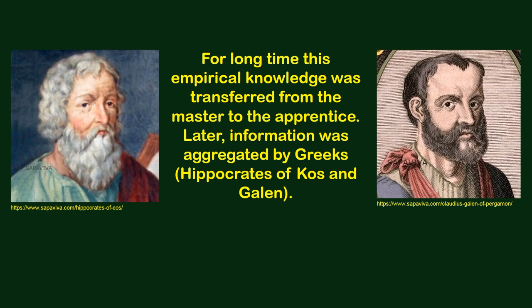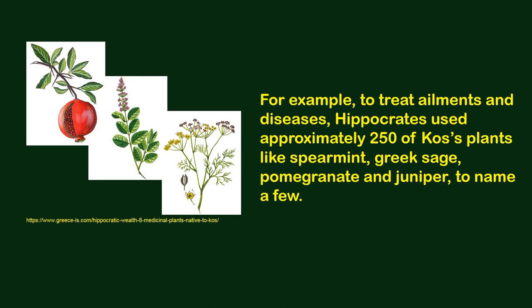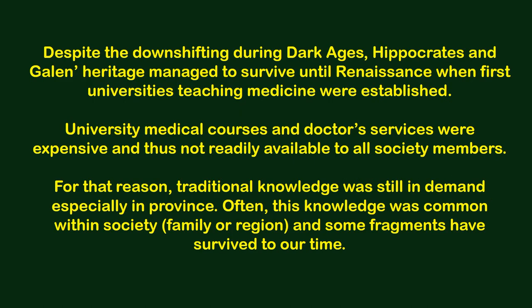For a long time, empirical knowledge was transferred from the master to the apprentice. Later, information was aggregated by Greeks — Hippocrates and Galen. For example, to treat ailments and diseases, Hippocrates used approximately 250 plants native to Kos Island, like spearmint, Greek sage, pomegranate, and juniper, to name a few. Despite the downturn during the dark ages, the Hippocrates and Galen heritage managed to survive until the Renaissance, when first universities teaching medicine were established. University medical courses and doctor services were expensive and thus not readily available to all social classes.